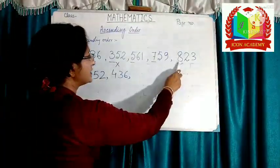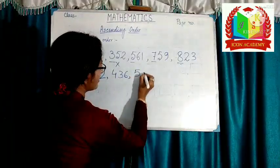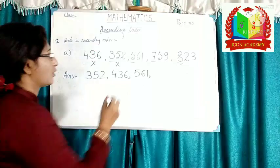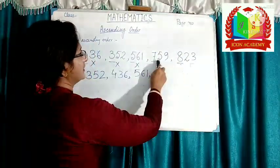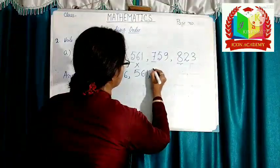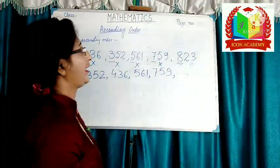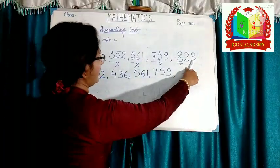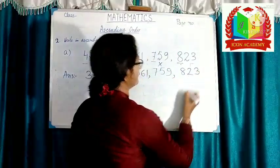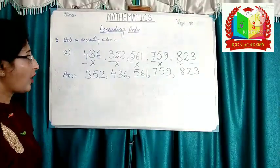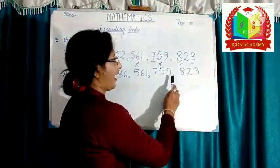5 is smaller than the other two remaining digits. So 561 is smaller than the other two numbers. Write 561 and cross the number. Now two numbers are left. 7 is smaller than 8, so 759 comes after 561. Write 759 and cross the number. What is left? 823. So 823 comes after 759. We have arranged these numbers in ascending order: 352, 436, 561, 759, and 823.